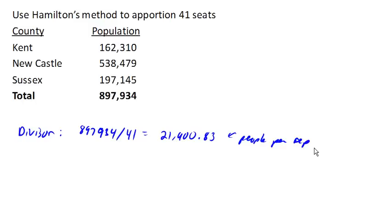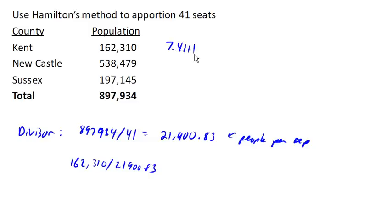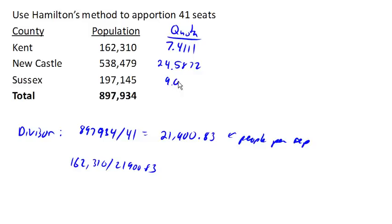Now we take each county's population and divide it by that number of people per representative. For example, for Kent we take 162,310 and divide it by 21,900, and we get 7.4111. This is called the quota — in an ideal world, this is how many representatives they should get. We repeat that for Newcastle and Sussex, and we get 24.5872 for Newcastle and 9.0017 for Sussex.